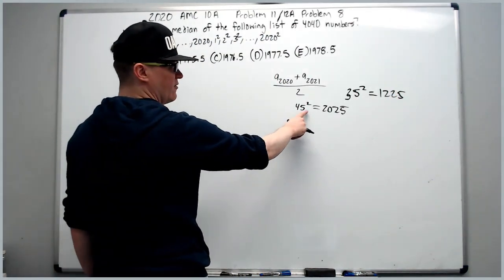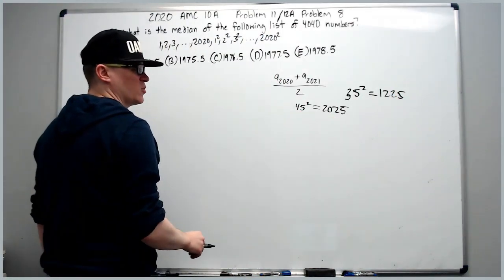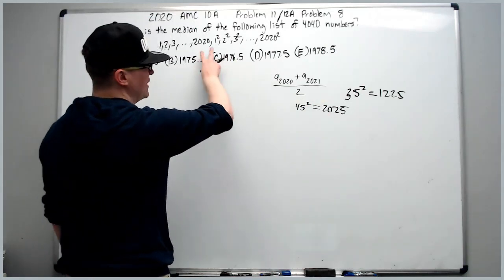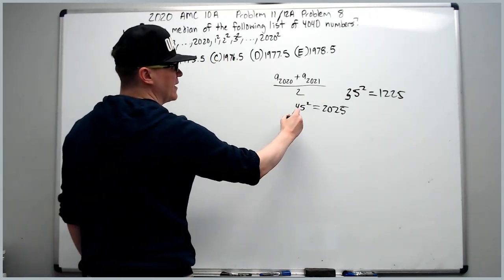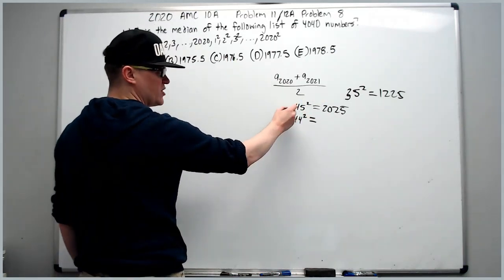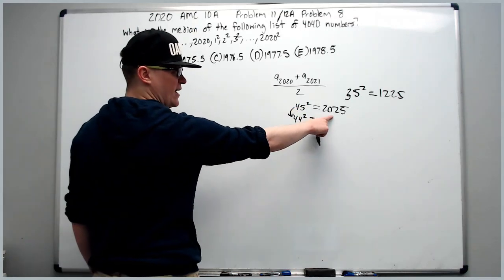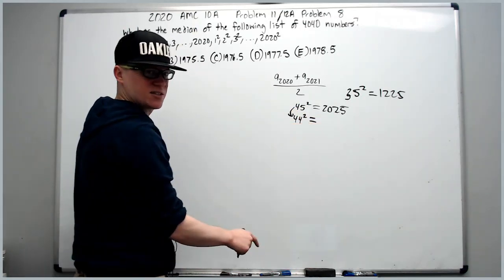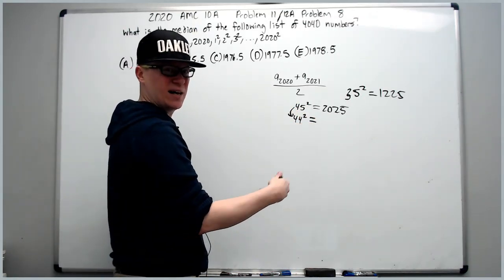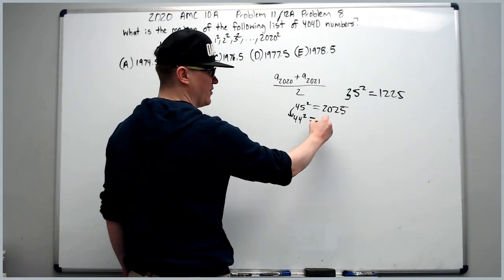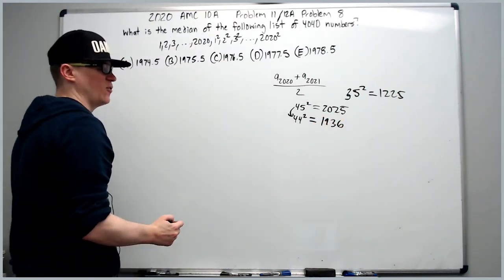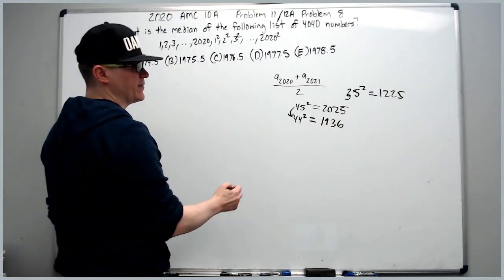Continuing on, 45 squared equals 2025, which is a little too big. But 44 squared is 89 less than this. So I can subtract 100 to get 1925 and add 11 to get 1936 for 44 squared.